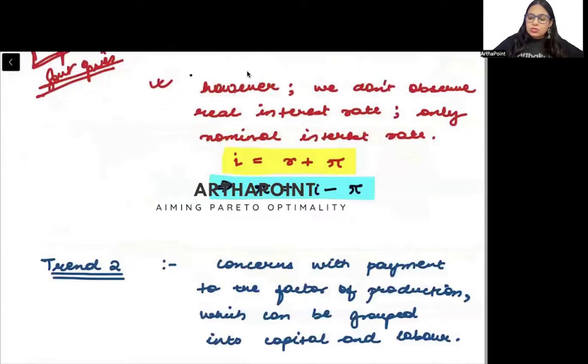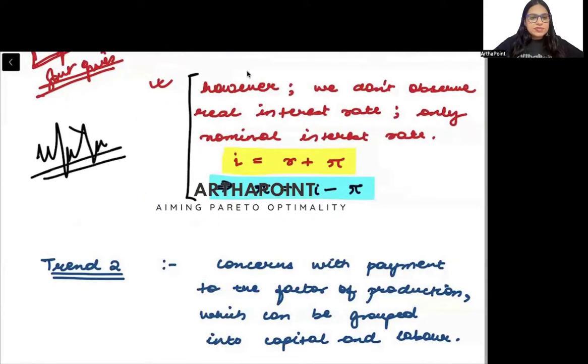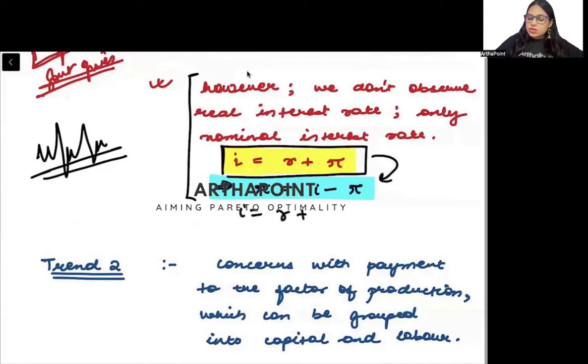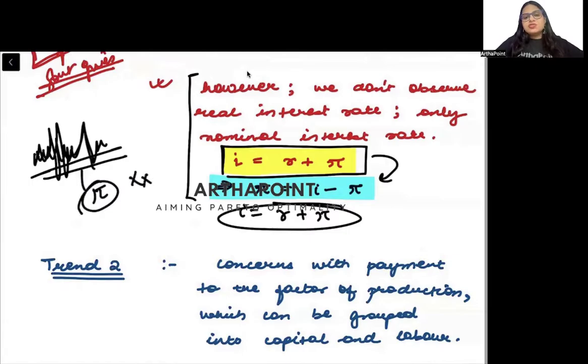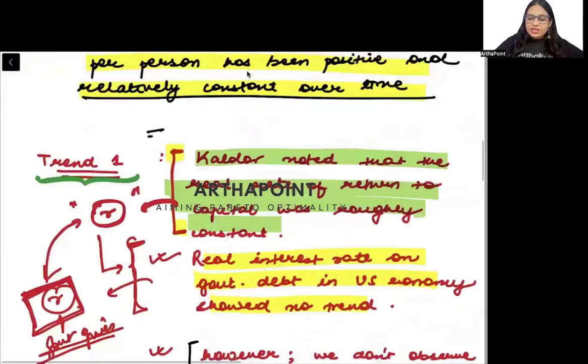However, you might think we always keep seeing that the interest rate fluctuates. The interest rate that we see is not real interest rate. That interest rate is nominal interest rate and nominal interest rate is real interest rate plus inflation. Interest rate, nominal interest rate fluctuates due to inflation in the economy. But we talk about real interest rate. That has remained more or less constant.